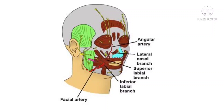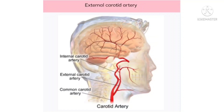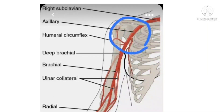The next pulse point is the carotid artery. The carotid arteries take oxygenated blood from the heart to the brain. The pulse from the carotids may be felt on either side of the front of the neck, just below the angle of the jaw.